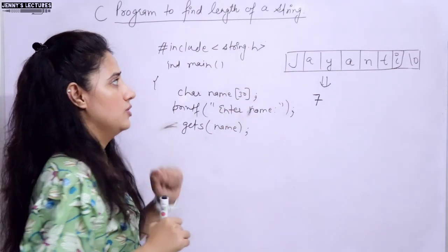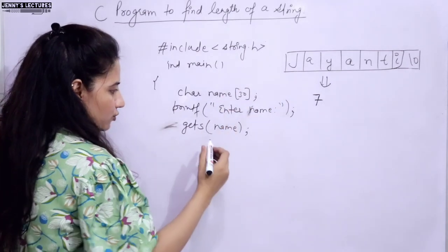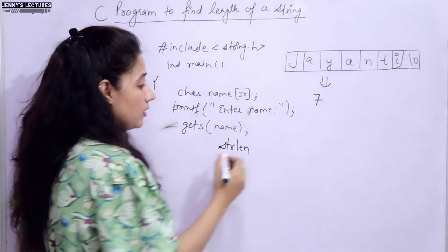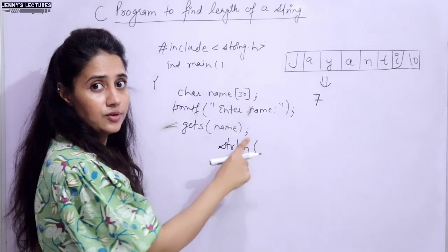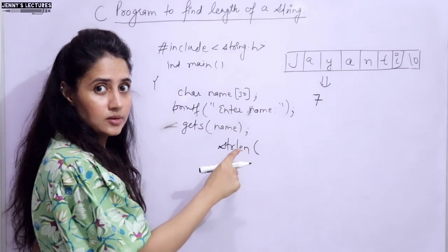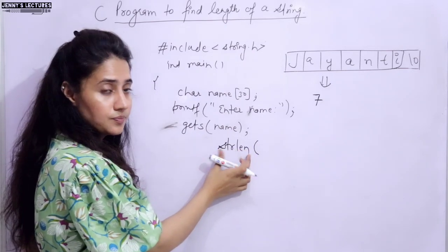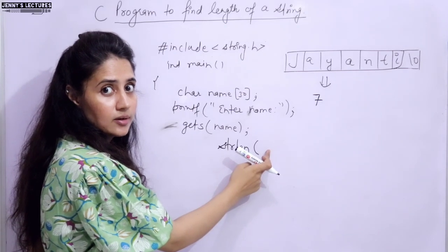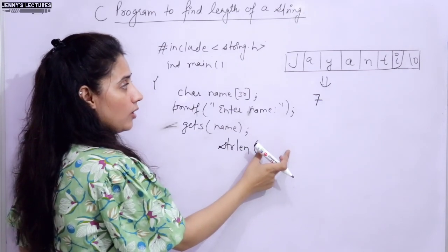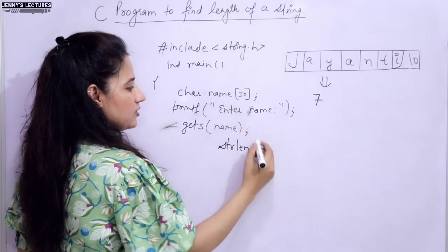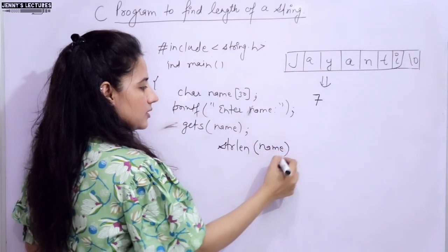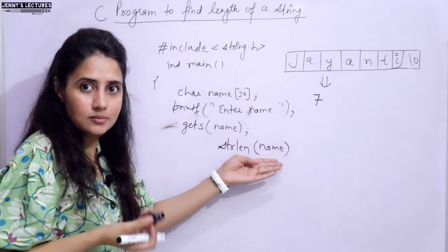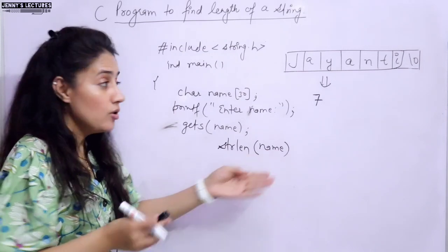Now find the length of the string using the strlen function. The parameter we pass is the string, or you can say a pointer to the string. Here you simply write the name of the string, which is 'name'. Just pass name - it is also a pointer.